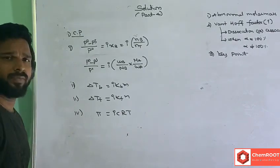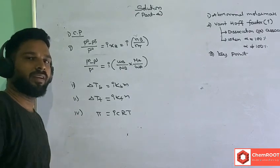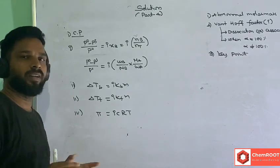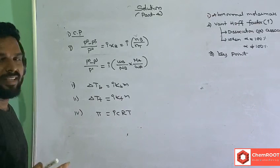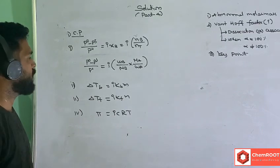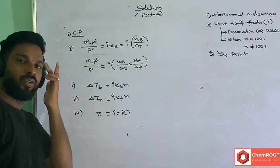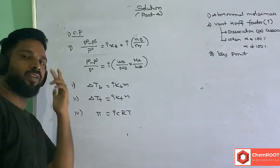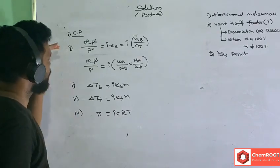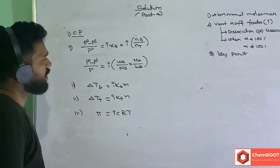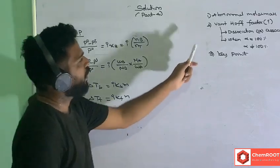So most of the time we have to write the formula including the Van't Hoff factor to avoid errors in the answers. If NaCl, K₂SO₄, or CaCl₂ is given, first find what i is, and then find the related answers.